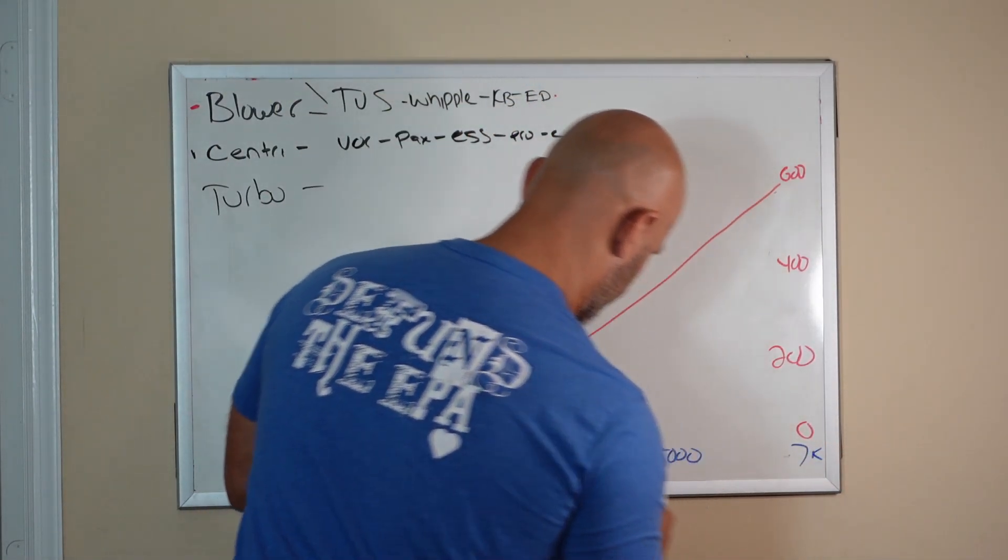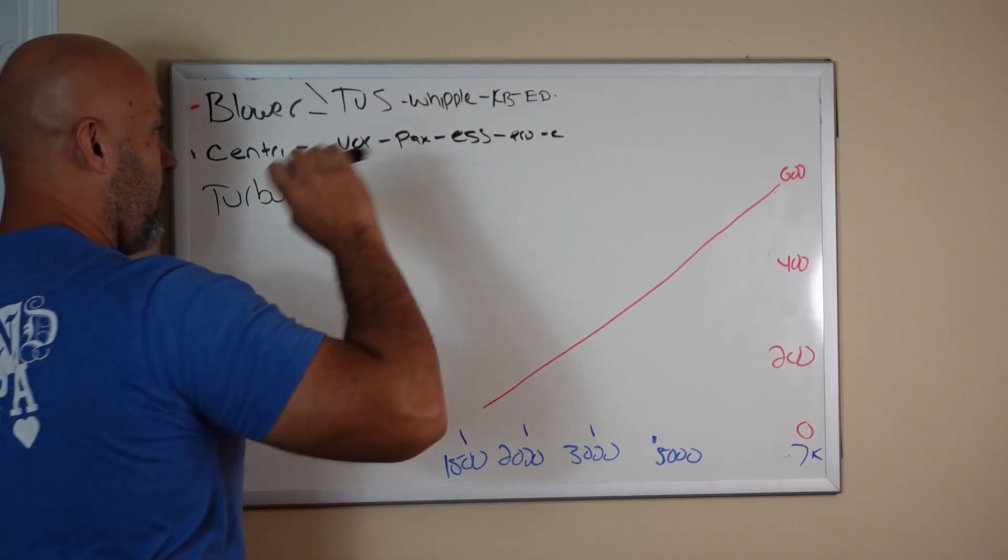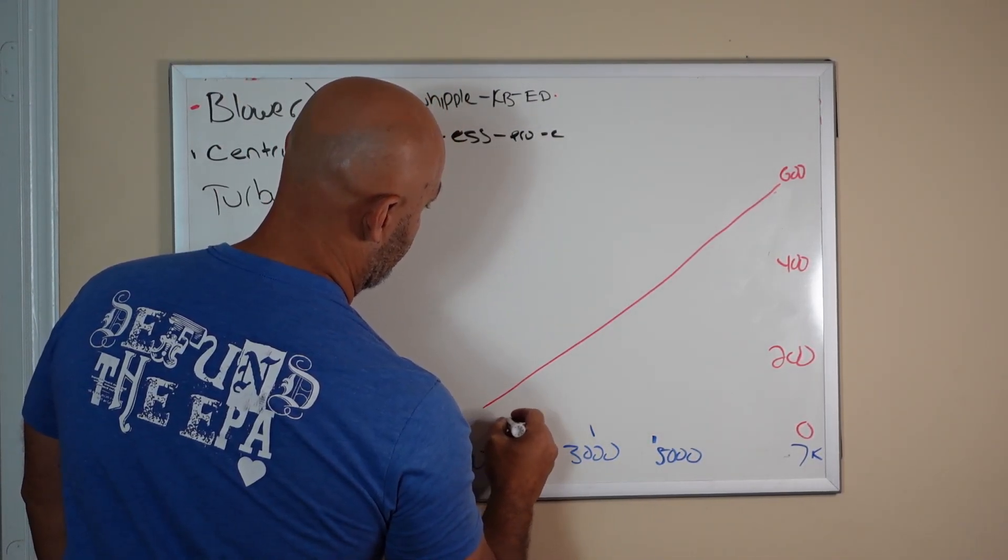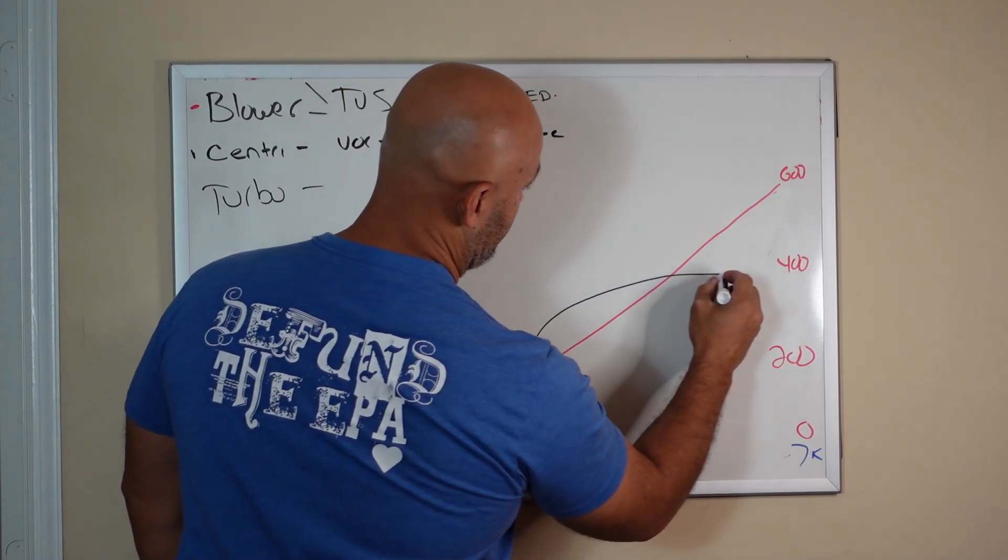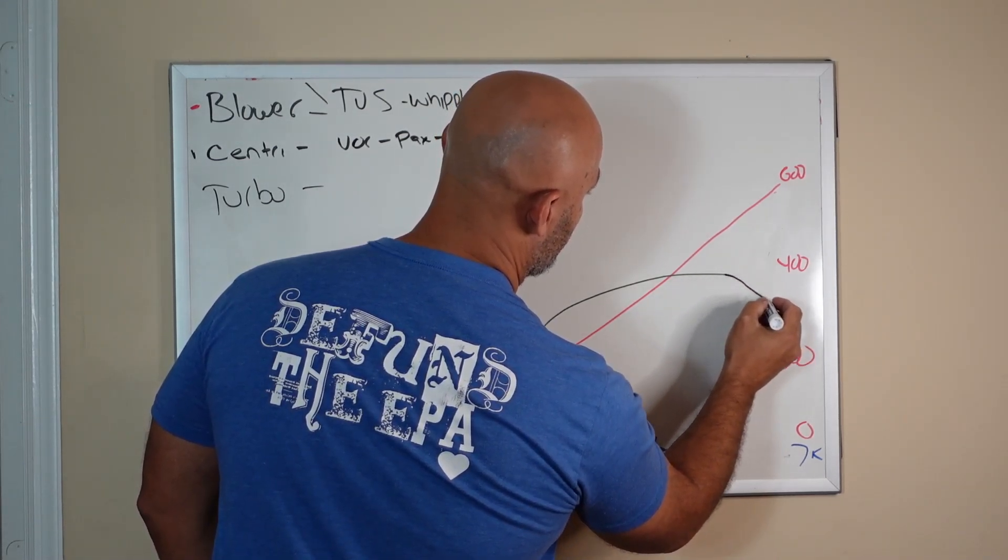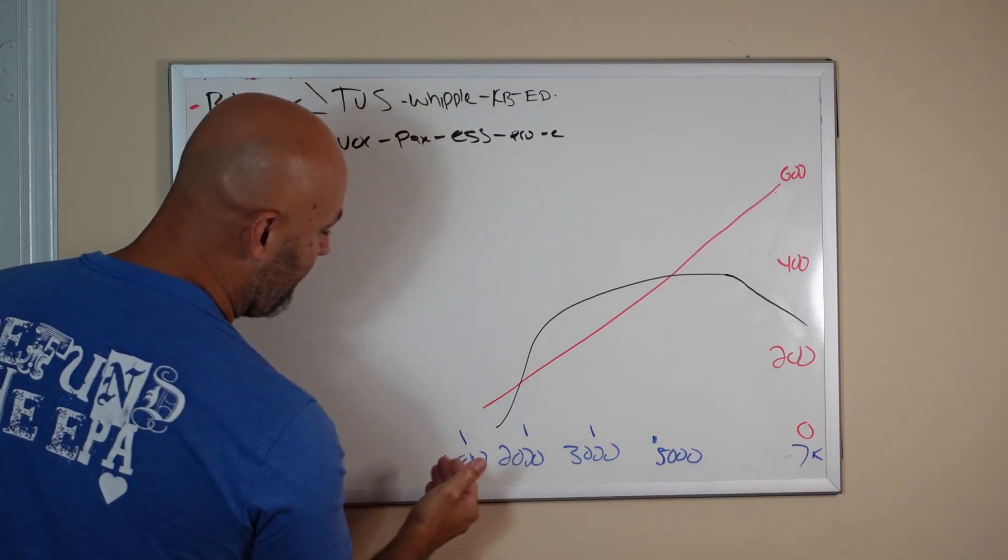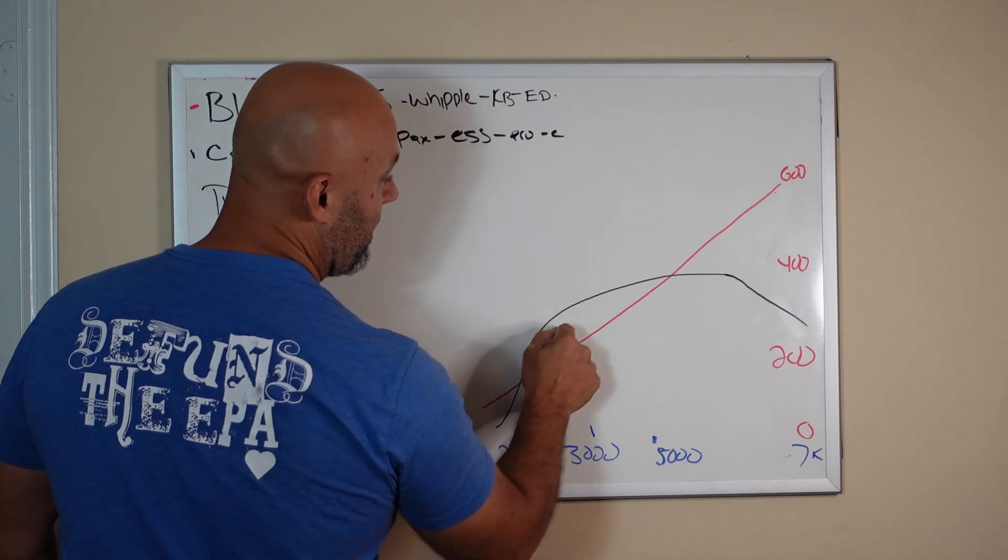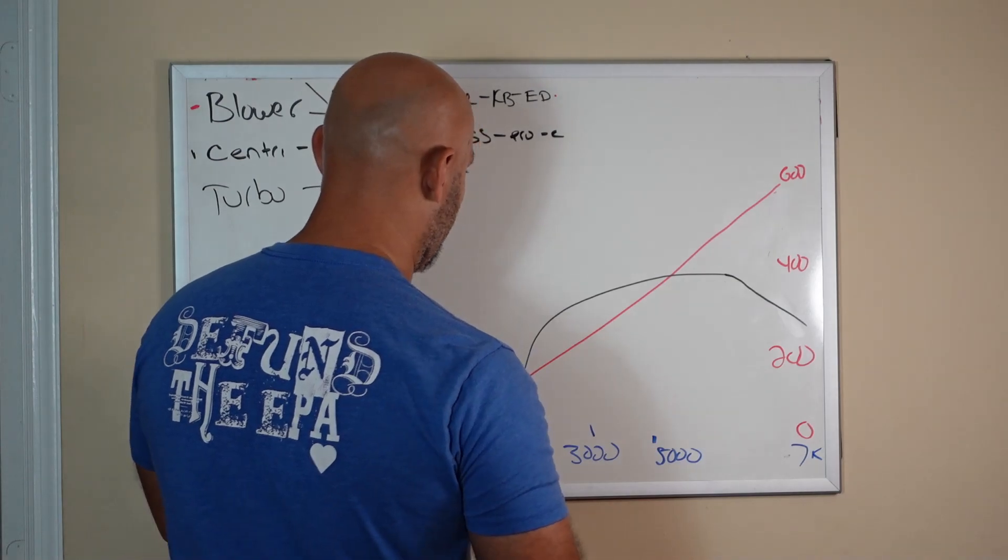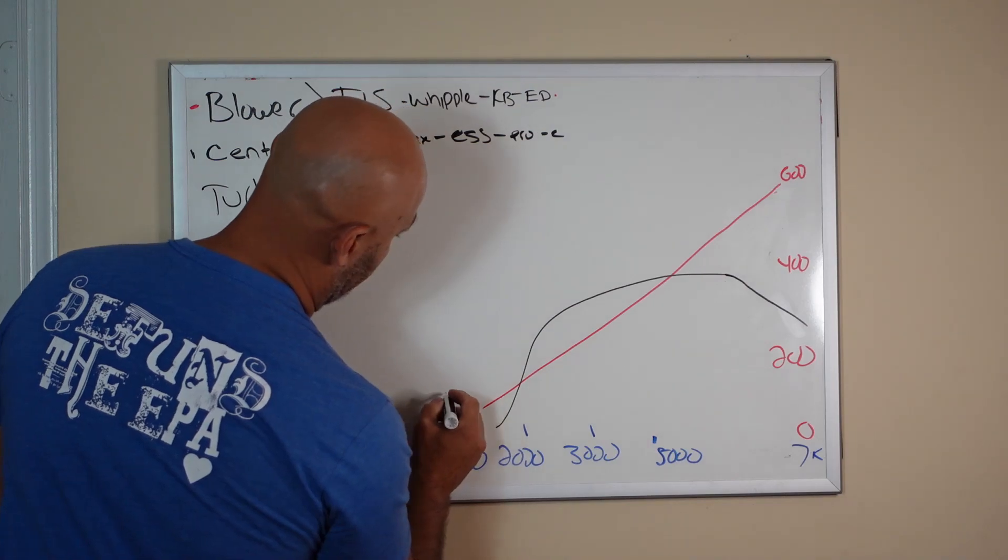But what does torque look like on a positive displacement blower? It looks like this. Then it drops, probably more so, drops a little sooner. But in the meat of it when you're driving around, taking off from a light at 2000 plus RPMs, this sucker is torquey. This sucker has tons of torque.